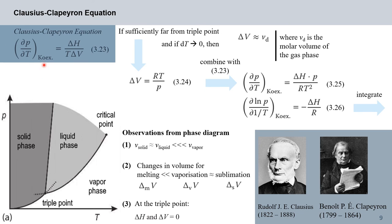Combining equations 3.21 and 3.22 gives the Clausius-Clapeyron equation: dP/dT at coexistence equals delta H divided by T times delta V. This equation is named after Rudolf Clausius and Benoit Clapeyron; it was Clapeyron's work on reversible processes that allowed substantial extensions to Clausius's work. Notably, this equation directly gives the slope along the equilibrium lines in the PT phase diagram.